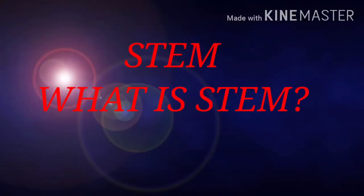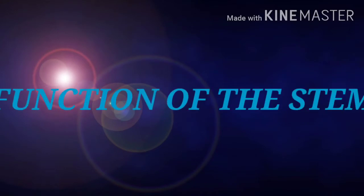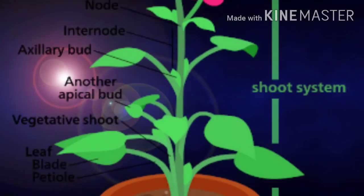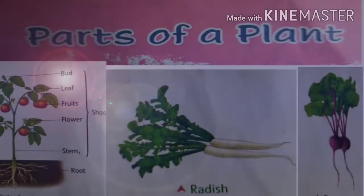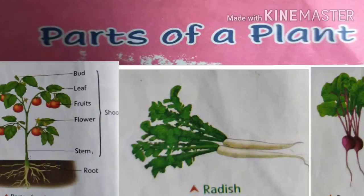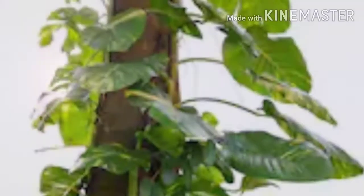So first we start about Stem. What is Stem and what are the functions of the Stem? The Stem is the main part of the shoot. Without the Stem, the plant cannot grow or live. It has many important functions. Functions of the Stem — Number 1: The Stem gives support to the plant.